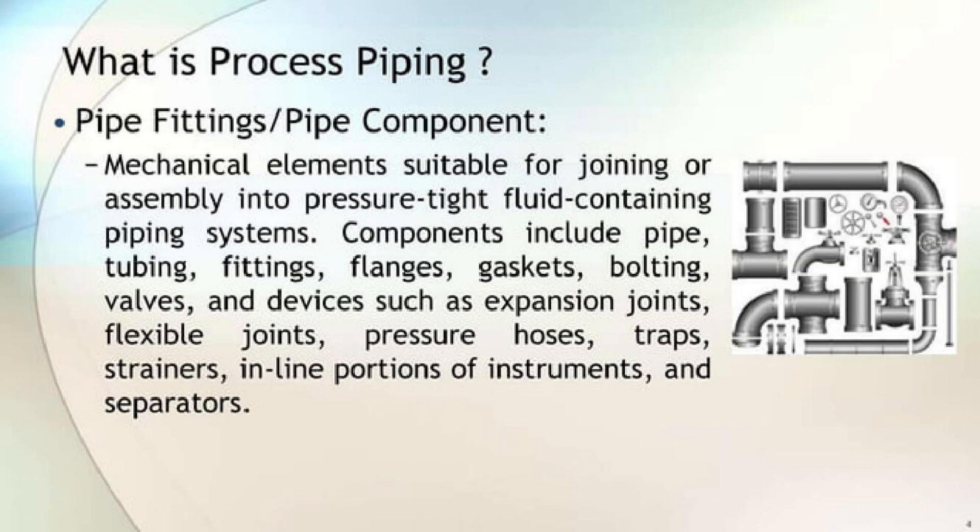What are Pipe Fittings or Pipe Components? Mechanical elements suitable for joining or assembly into pressure-tight fluid containing piping systems. Components include pipe, tubing, fittings, flanges, gaskets, bolting, valves, and devices such as expansion joints, flexible joints, pressure hoses, traps, strainers, in-line portions of instruments and separators.